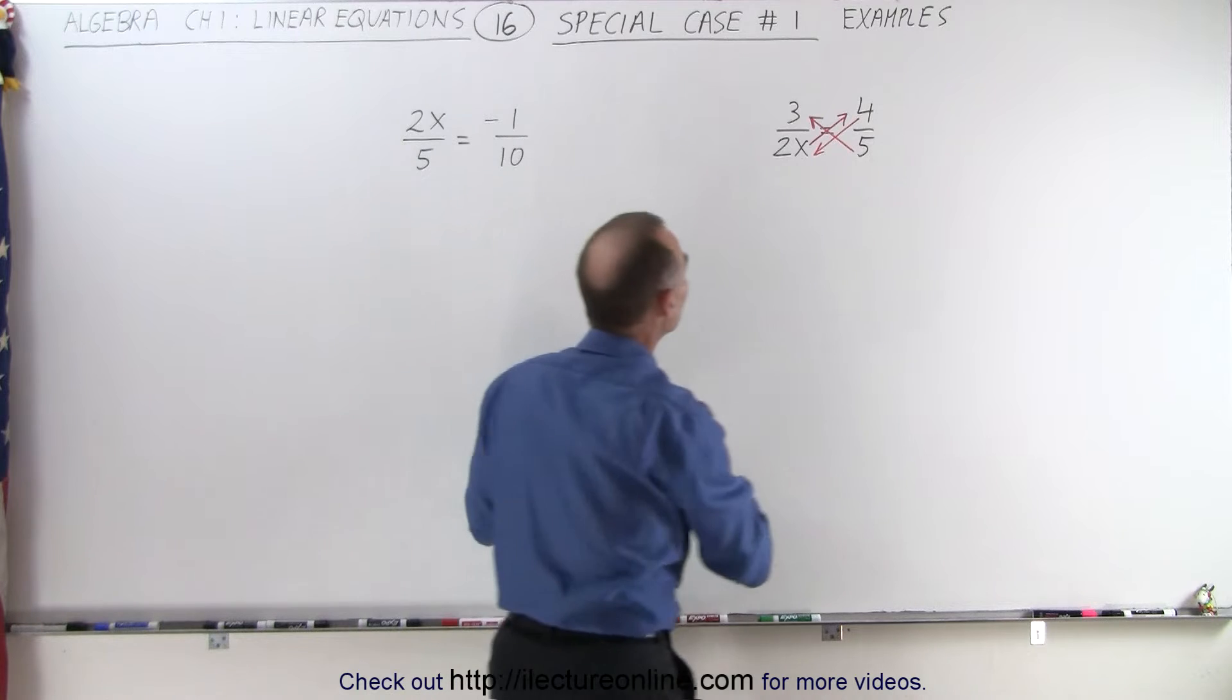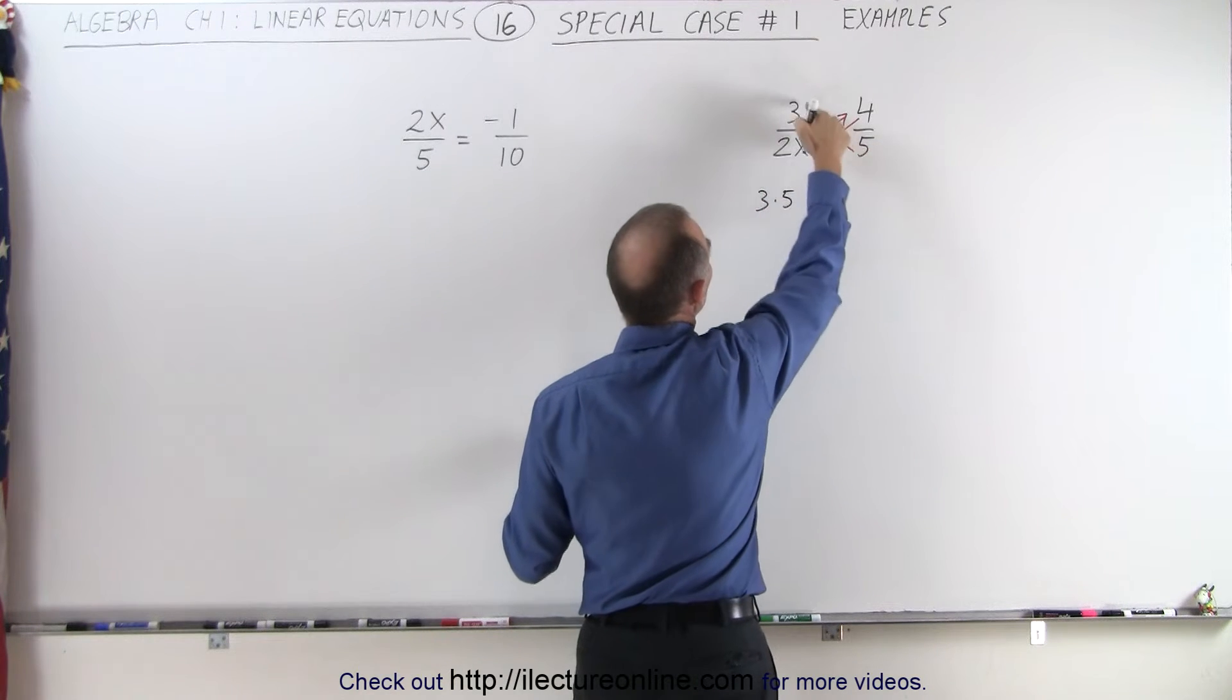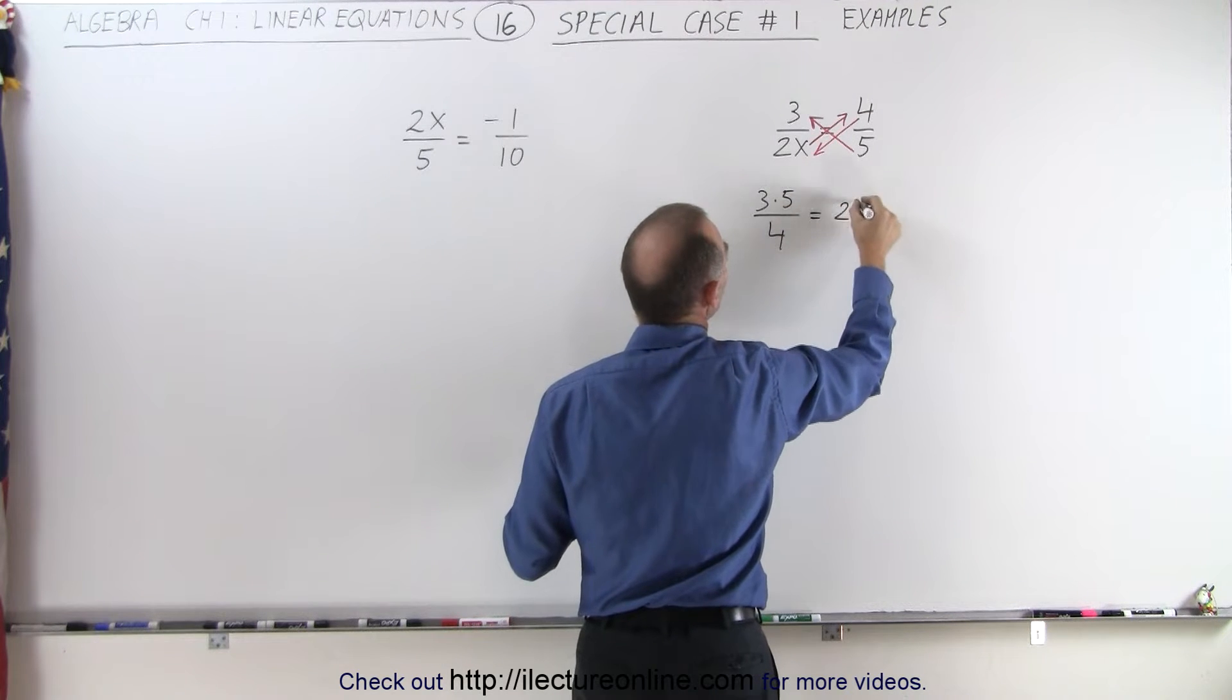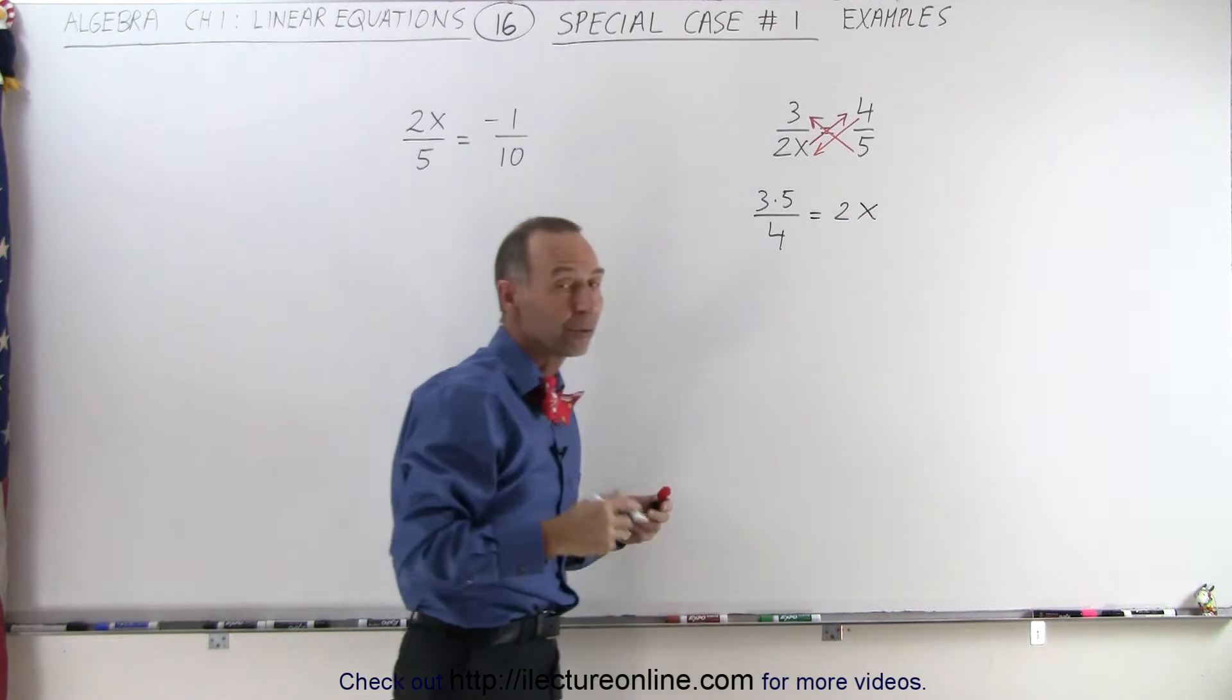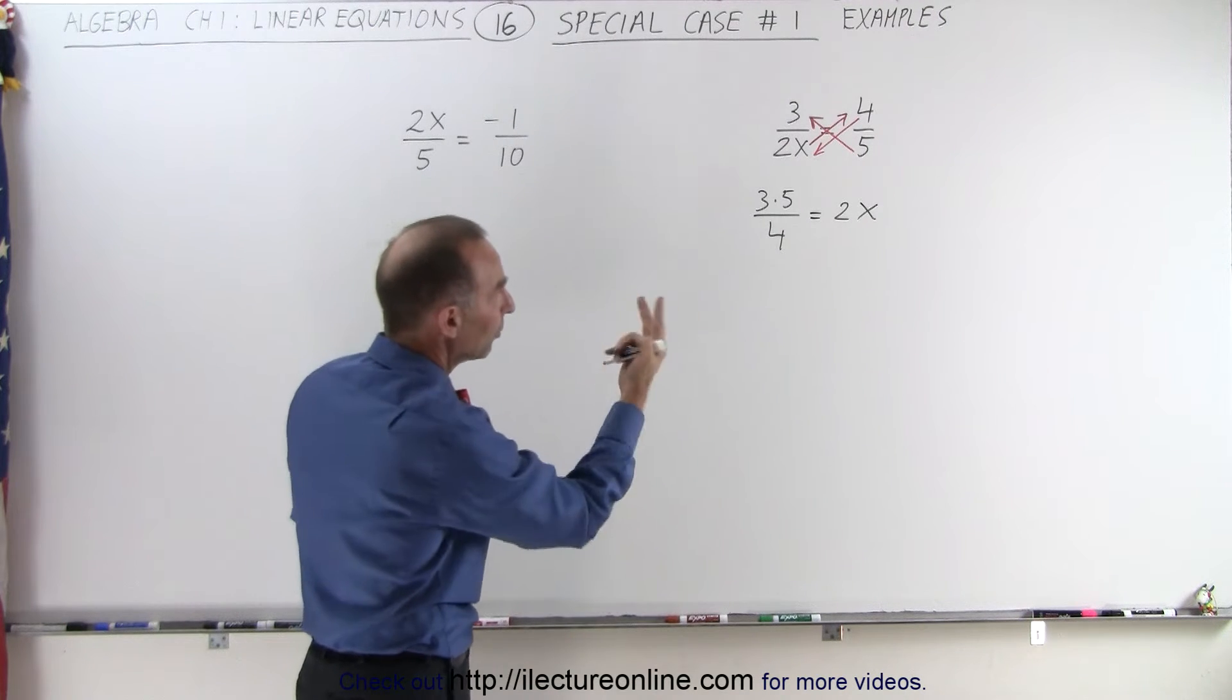What happens when I do that? Notice I end up with 3 times 5 since the 5 moves up here. The 4 comes down here and that equals 2 times x. Now 3 times 5 over 4 equals 2x. I can actually turn this equation around.